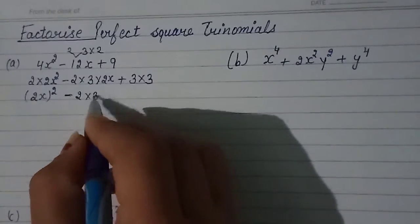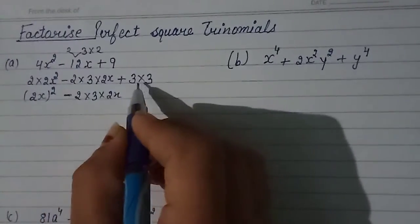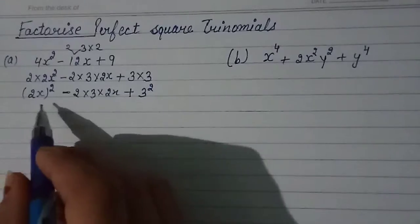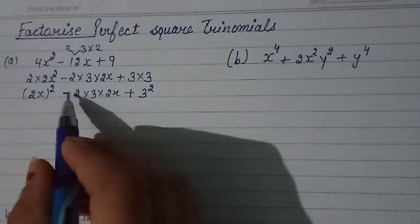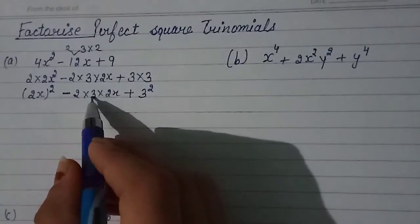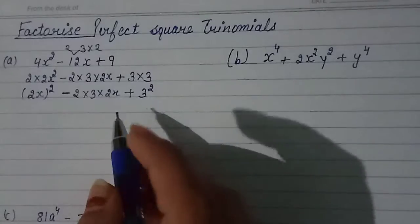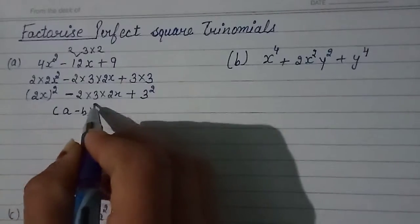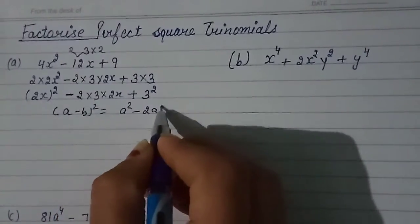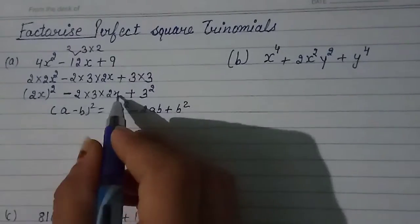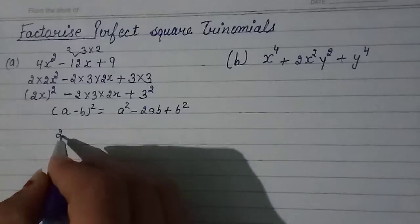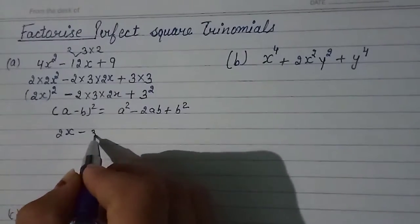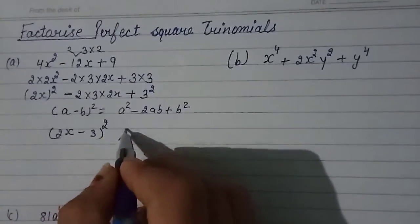2ab means 2 into 3 into 2x, plus 3 squared. Can you see it? This is a squared minus 2ab plus b squared. So this identity is a minus b whole squared, which equals a squared minus 2ab plus b squared. Here a equals 2x and b equals 3, so the answer is 2x minus 3 whole squared.